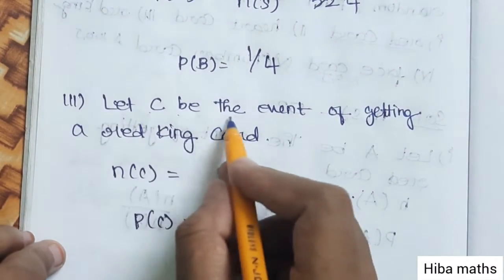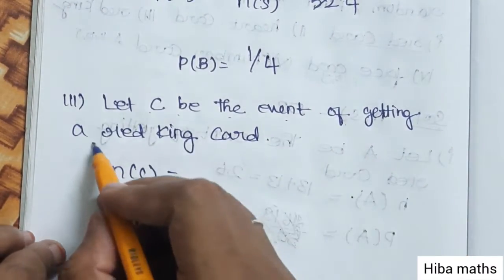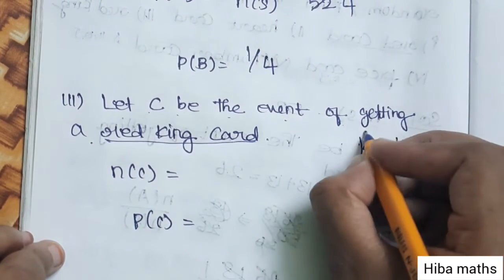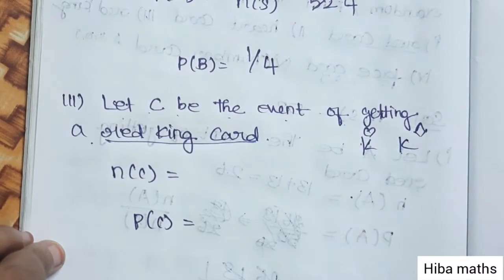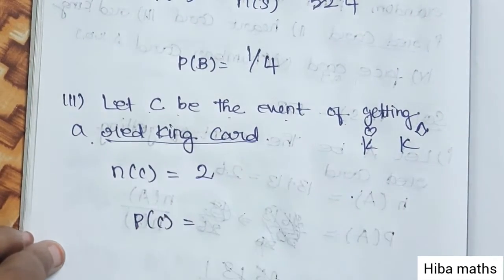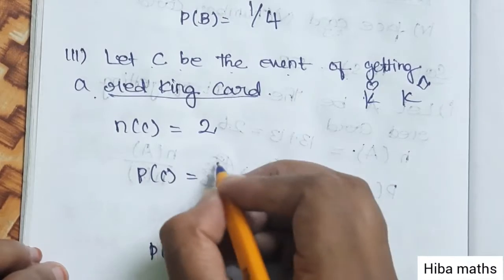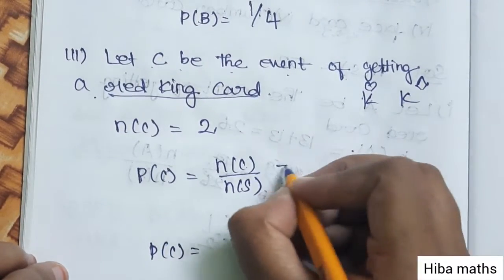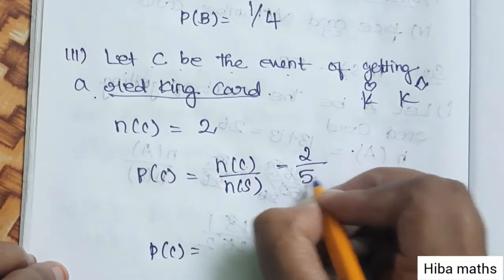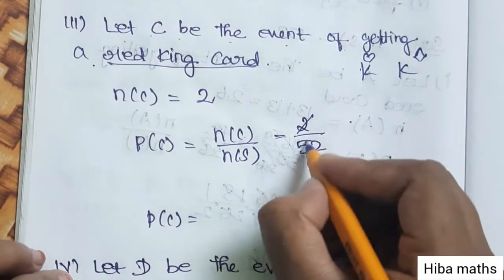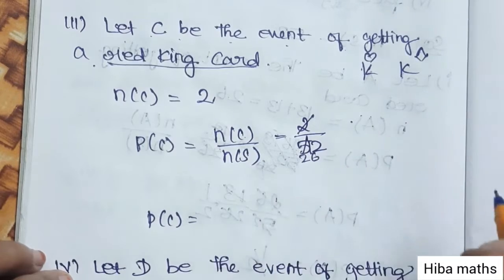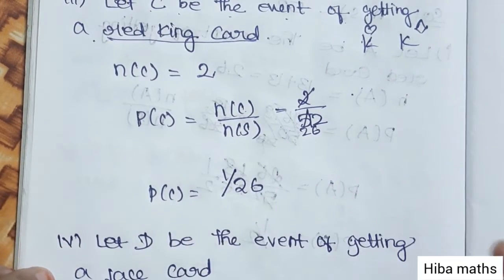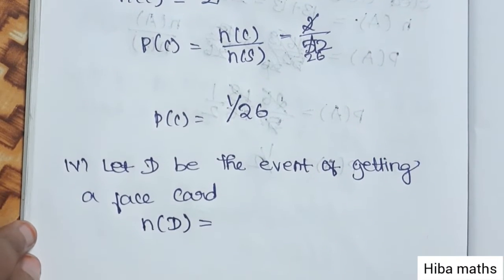Third subdivision: Let C be the event of getting a red king card. Red color kings: one heart king and one diamond king, so N of C is 2. P of C equals N of C by N of S, that is 2 by 52. Simplifying gives P of C equals 1 by 26.